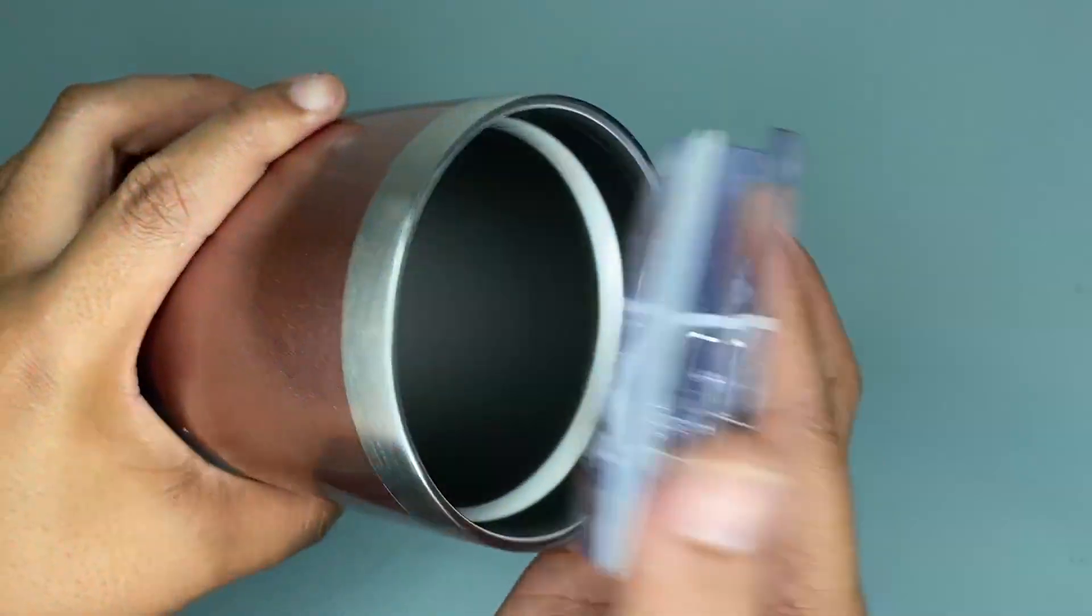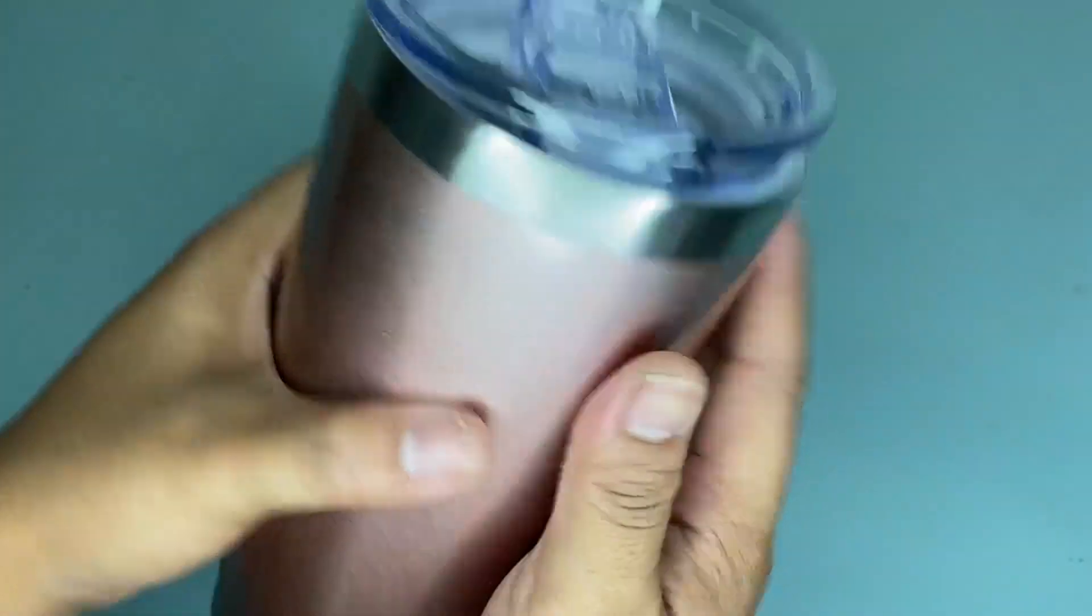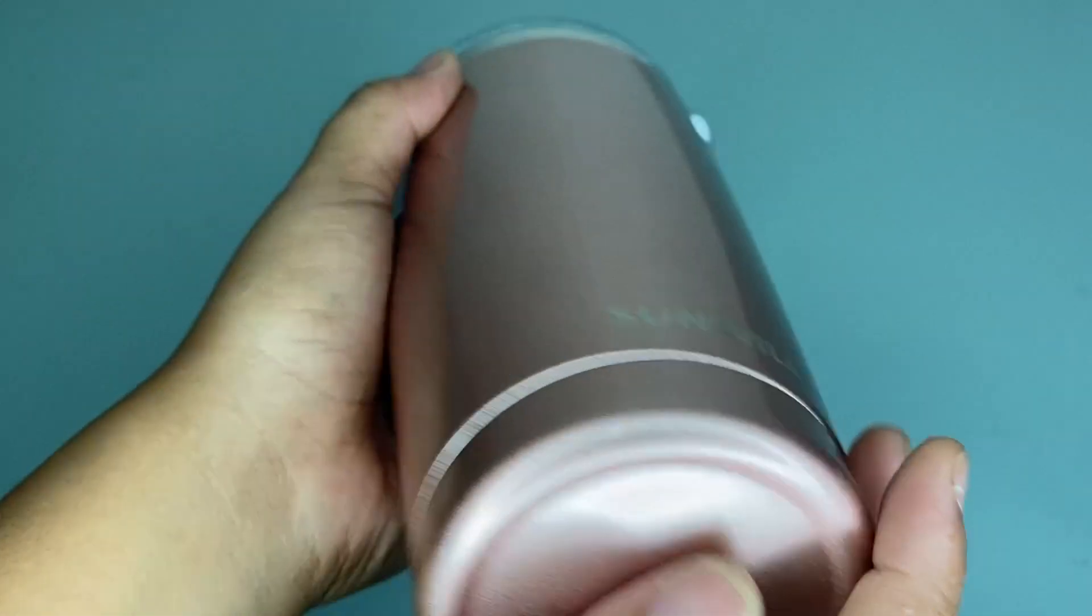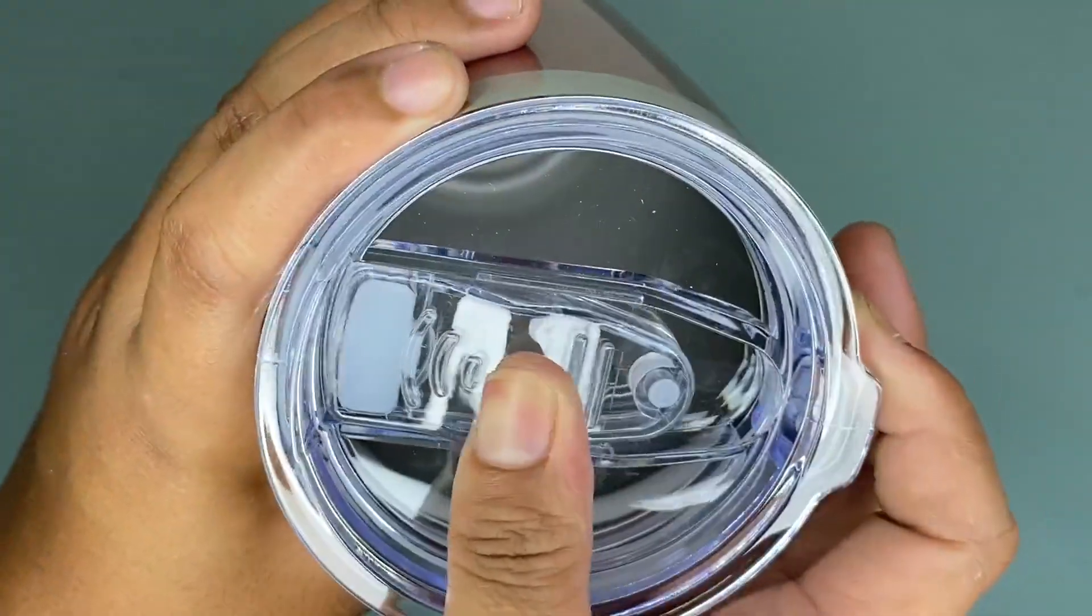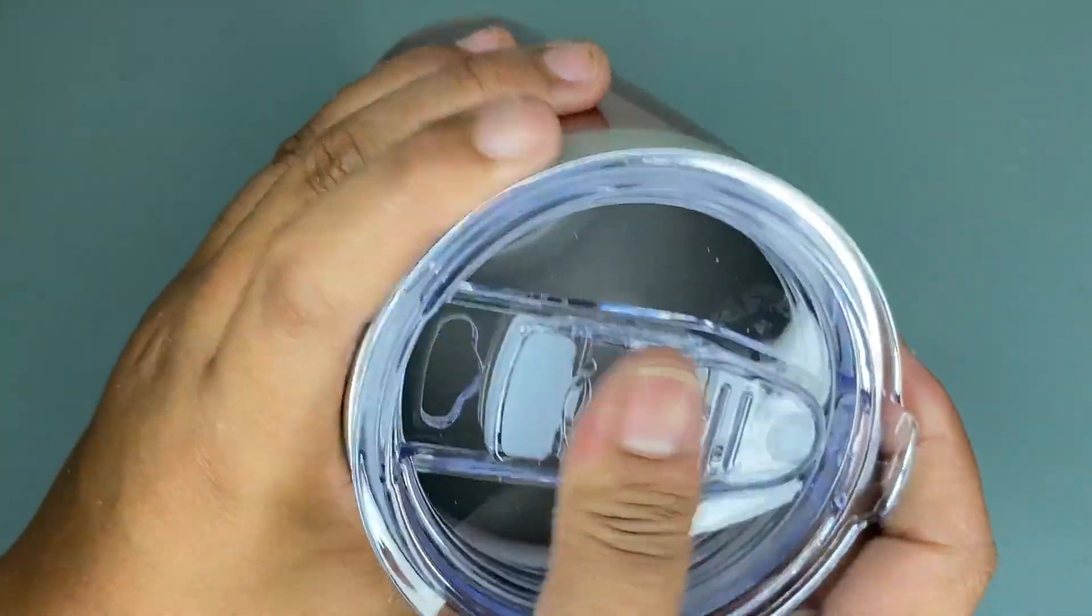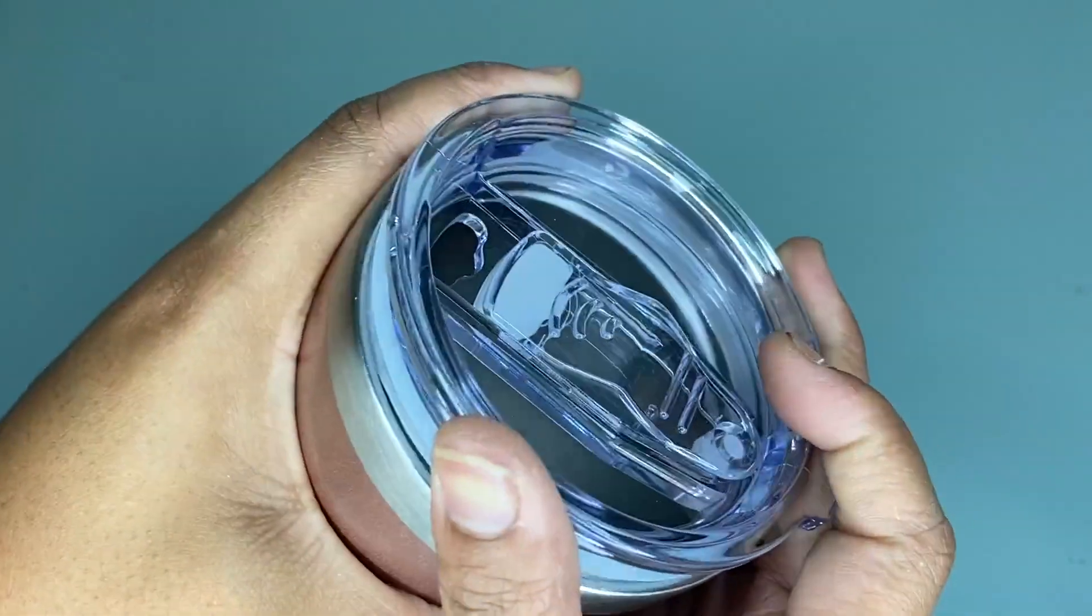It will keep your drinks hot for over six hours and cold for around 24 hours. The drinking hole is on the top with a sliding lid cover and it also has an extra sealed lid.